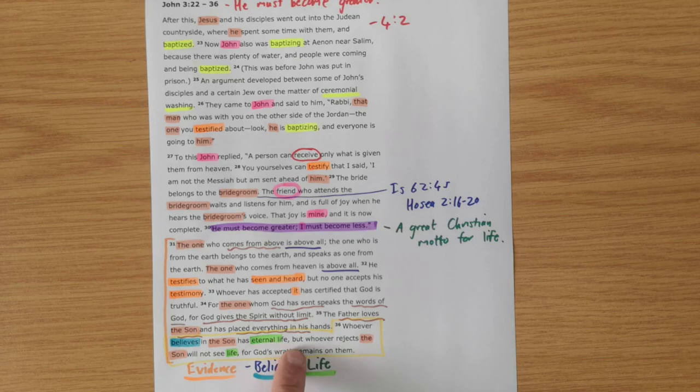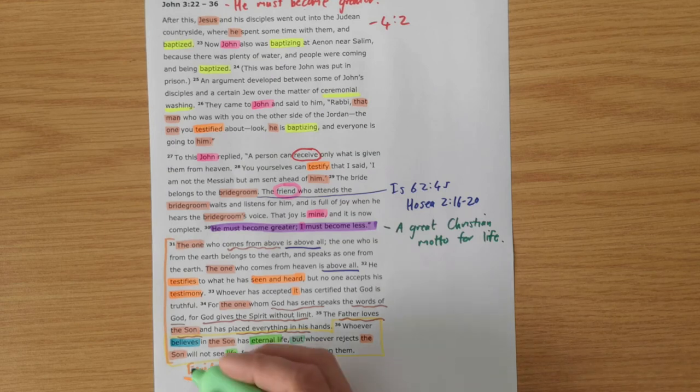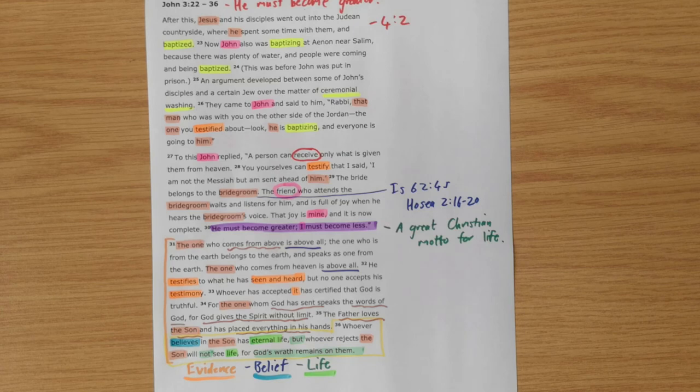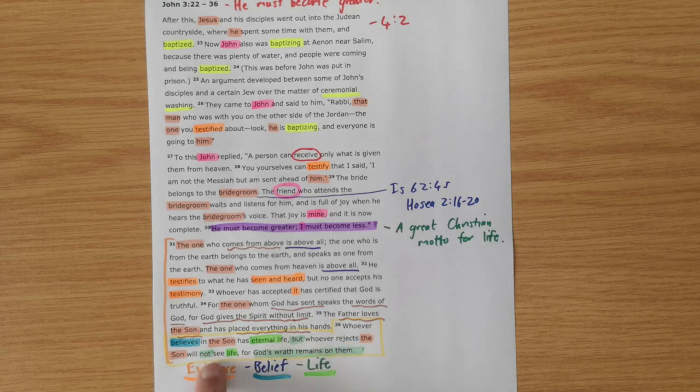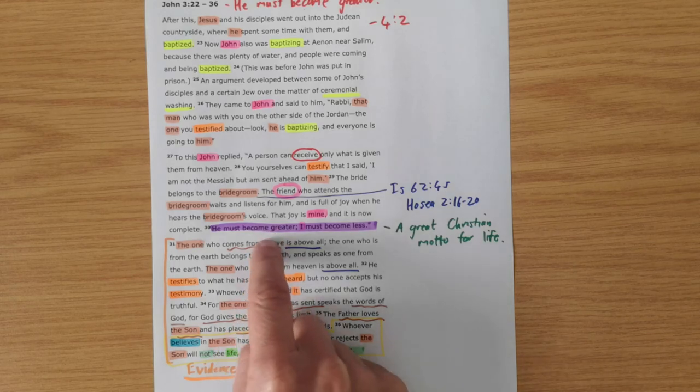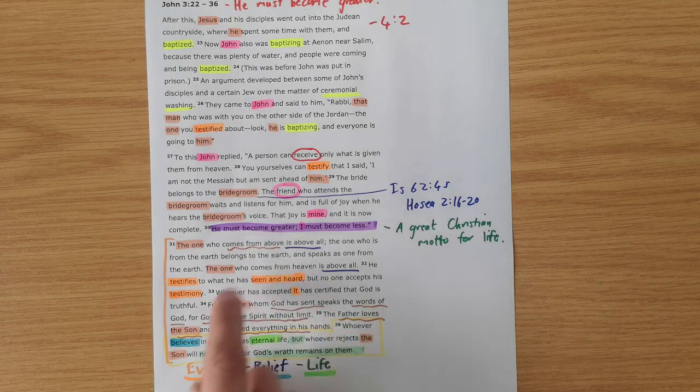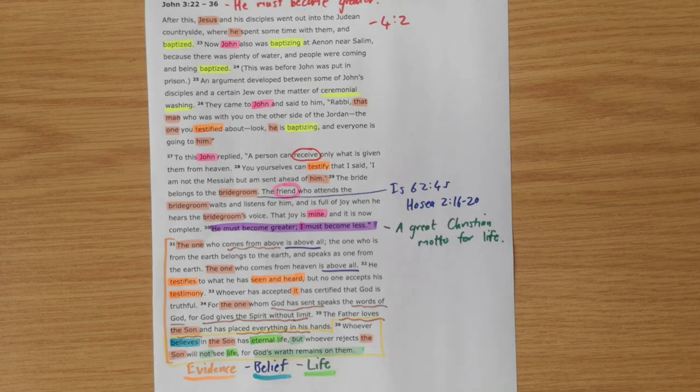We are given the but statement here though. The other side. But whoever rejects the Son will not see life. God's wrath remains on them. So there's a flip side of this coin. For those who don't believe, for those who reject, they cannot have life. Life is only found through the Son. And if you don't believe in him, you remain under God's wrath. And that's why John was saying he must become greater. We don't want anybody to remain under God's wrath. So we need to make his greatness known so that more and more people will believe in him and receive life. That the wrath of God will be taken from them.